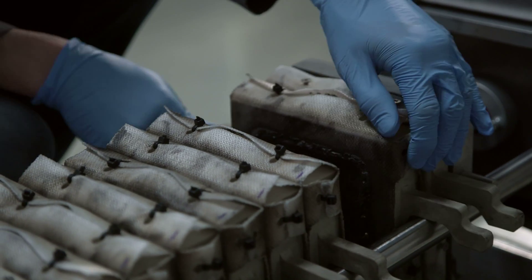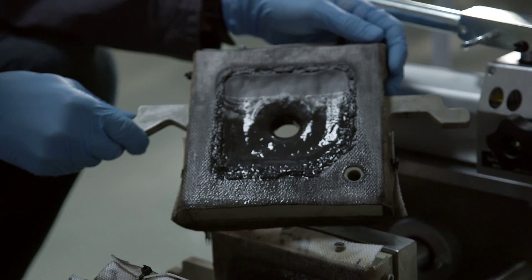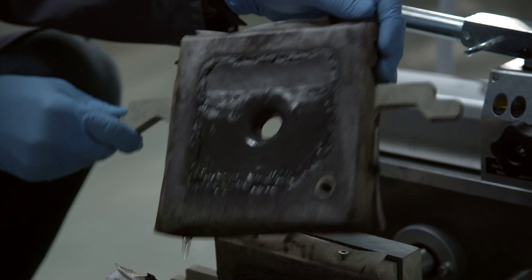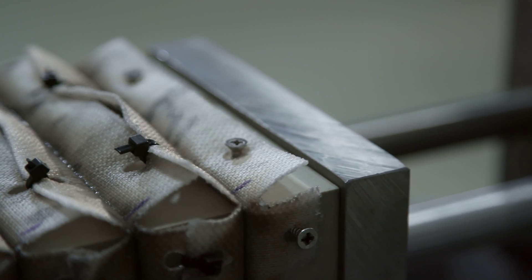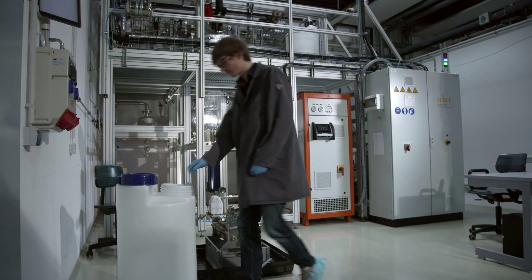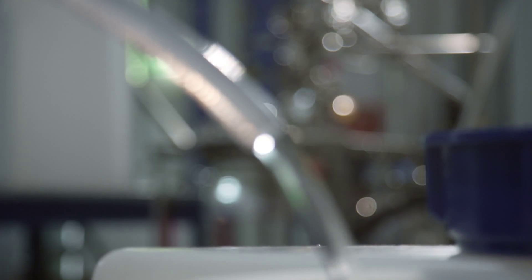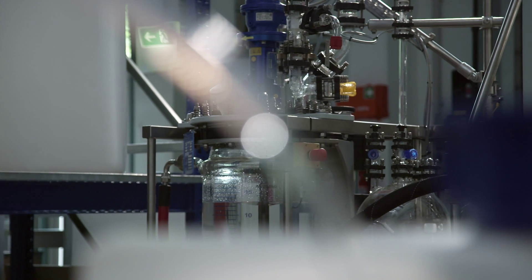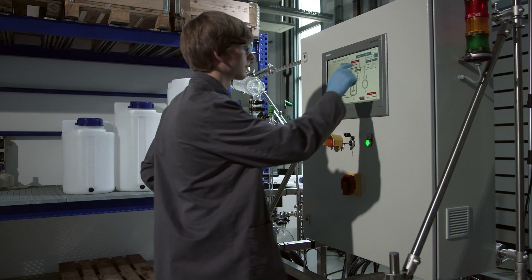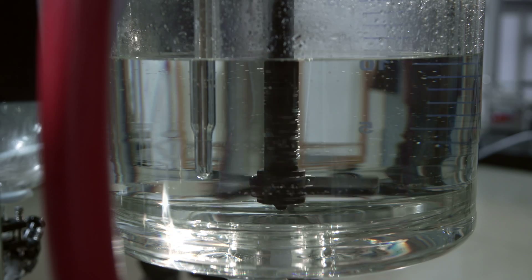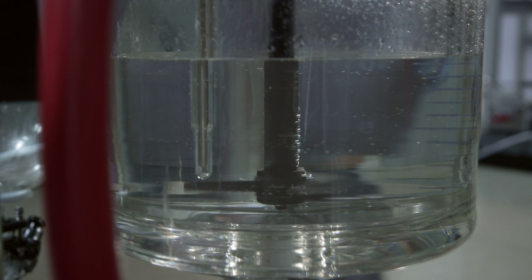Through further metallurgical processing, these metals can be recovered from the mass. The lithium is in the liquid phase. This liquid is then concentrated. After that, the engineers pour the solution, which contains the lithium, into another reactor. Here, the metal precipitates at around 90 degrees Celsius.